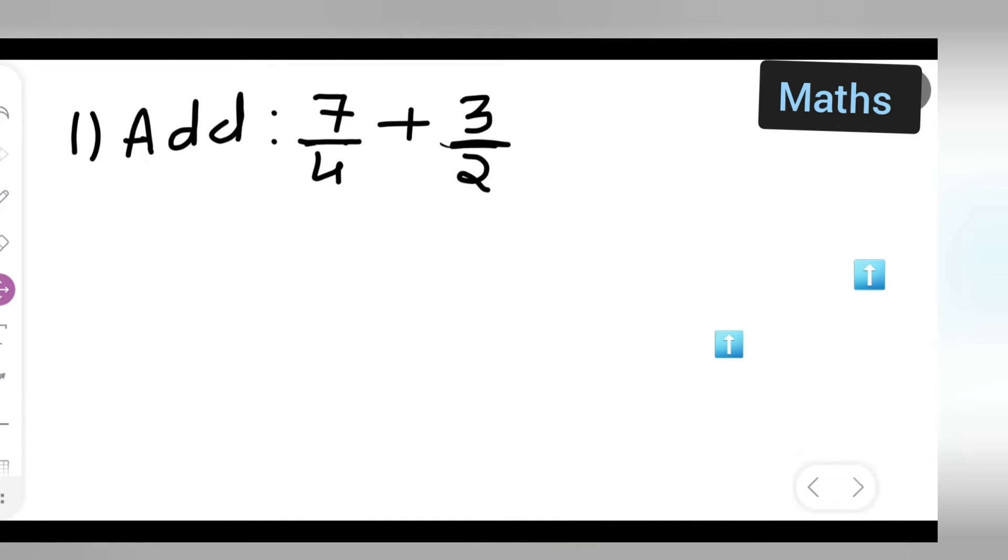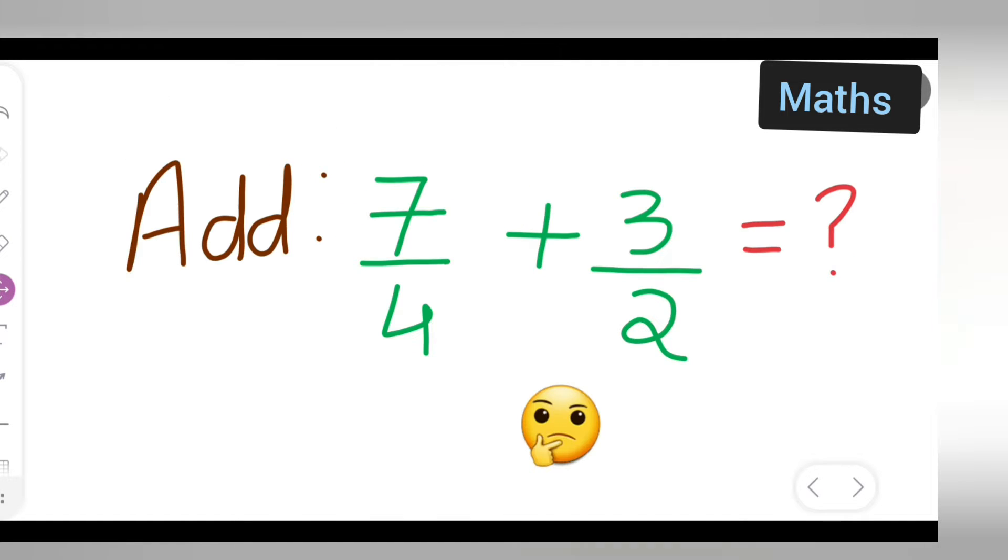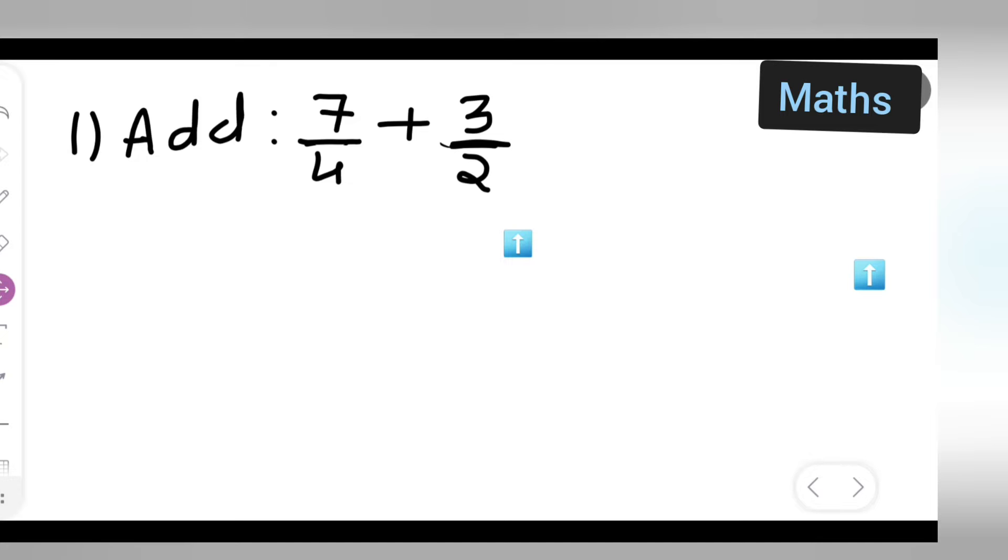First, you can take down the question: add 7 upon 4 plus 3 upon 2. How are we going to do this? First, you will have to write 7 upon 4 and multiply it with the denominator of the other.